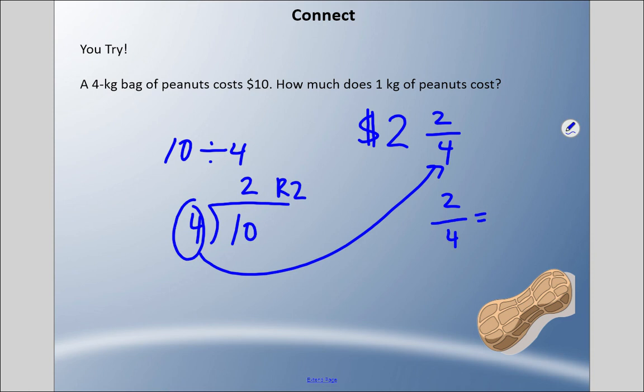What do we need to get? We can't go to tenths, but we could go to hundredths by multiplying top and bottom by 25. So two times 25 is 50.